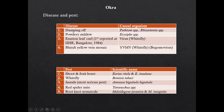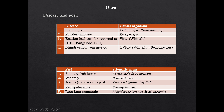Diseases and pests of Okra: Damping off is caused by Pythium species or Rhizoctonia species. Powdery mildew is caused by Erysiphe species. Enation leaf curl is caused by a virus and vector of enation leaf curl virus is whitefly. This disease was reported at IIHR Bangalore in 1984. Yellow Vein Mosaic is caused by Bendy Yellow Mosaic Virus and the vector is whitefly. Both leaf curl and yellow mosaic are begomovirus. Pests: Shoot and fruit borer - Earias vittella and Earias insulana. Whitefly is Bemisia tabaci. Jassids are the most serious pest of Okra - Amrasca biguttula biguttula. Red spider mite is Tetranychus species. Root knot nematode in Okra is Meloidogyne javanica and Meloidogyne incognita.